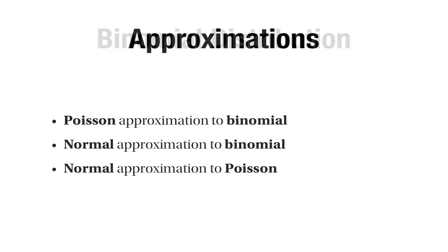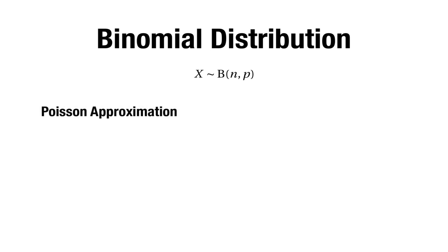I'd like to begin with a little bit of revision. Suppose that you've got a random variable with a binomial distribution: X has the binomial distribution with parameters n and p, n being the number of trials and p being the probability of success. Sometimes you can make a Poisson approximation — you approximate X with a random variable Y which has a Poisson distribution with parameter lambda, choosing lambda equal to n times p. The reason is that np is the expected value of X, and lambda is the expected value of Y, so by setting lambda equals np we make sure X and Y have exactly equal means.